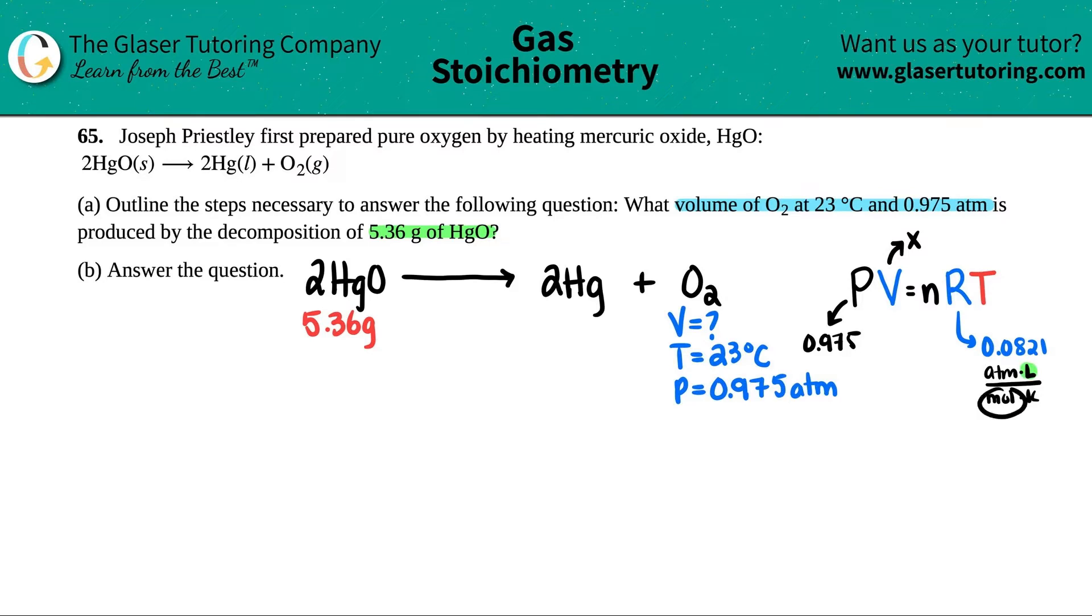Now we need moles and Kelvin. The temperature, capital T, has to be in Kelvin, but every single time for this chapter, they're going to give it to you in Celsius. We have to first know what this is in Kelvin, but that's easy. 23 degrees Celsius—all you have to do is plus 273 to get the Kelvin. So 23 plus 273 is 296 Kelvin.